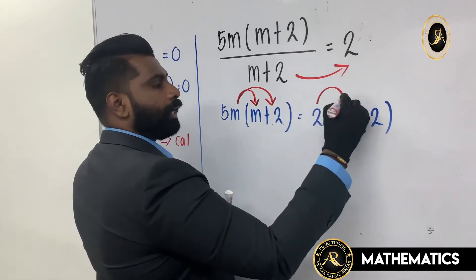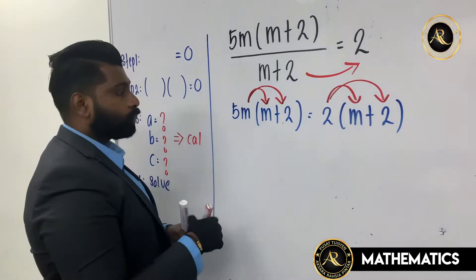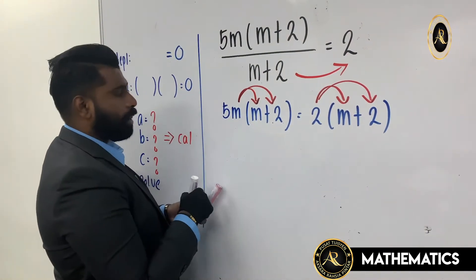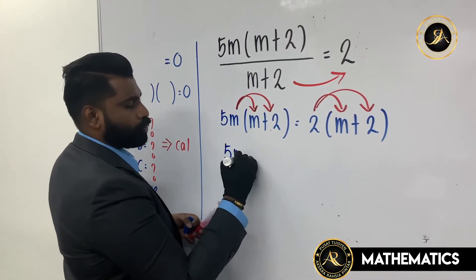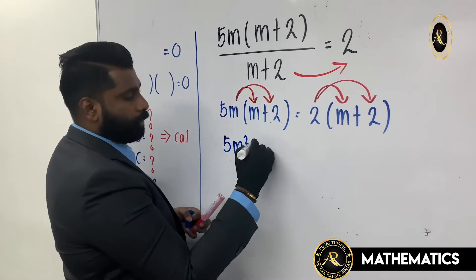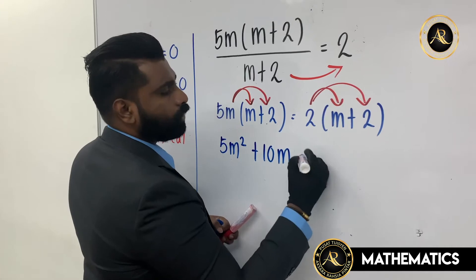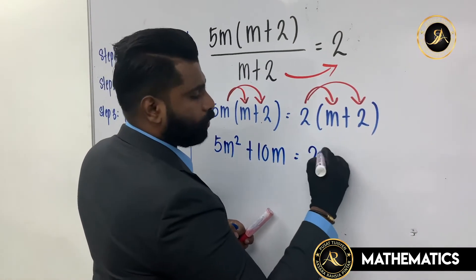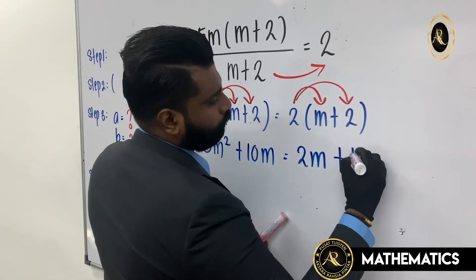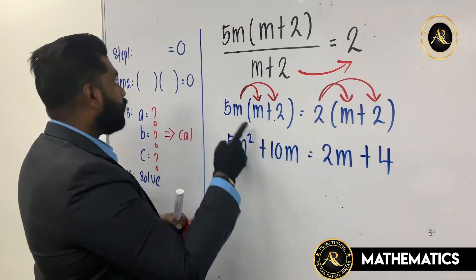You're going to multiply inside here — expand — and here also you expand. So: 5m times m becomes 5m squared, 5m times 2 becomes 10m, equals to 2 times m becomes 2m, and 2 times 2 becomes 4.